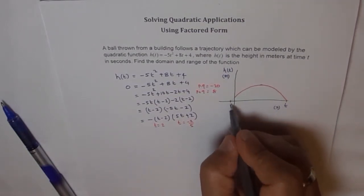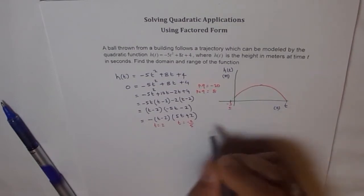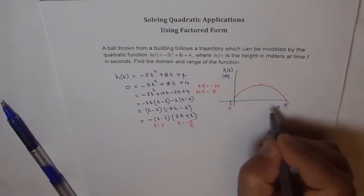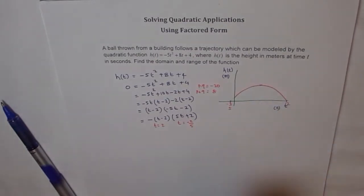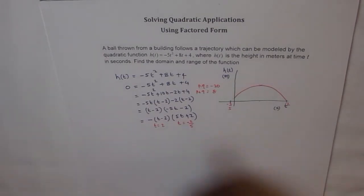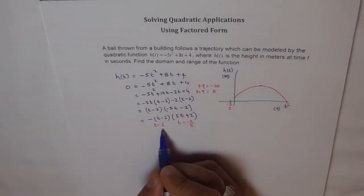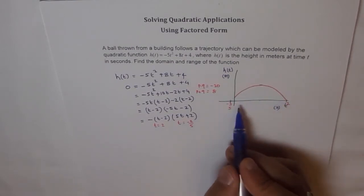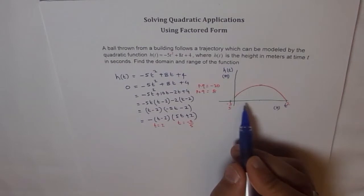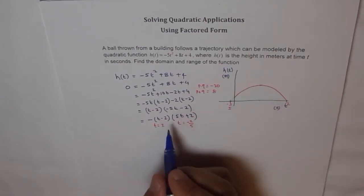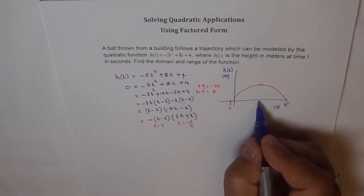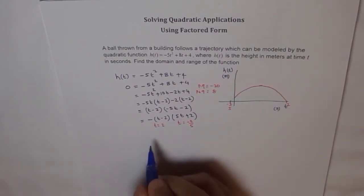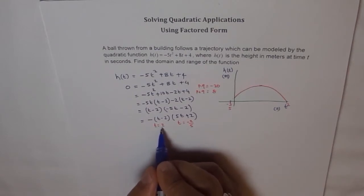It seems this point is minus 2 over 5, and this point here is 2. So the mid value will be - we will add them and divide by 2. In any case, we know what the domain is. At t equals 2, the ball strikes the ground, and therefore it remains in the air from 0 to 2.